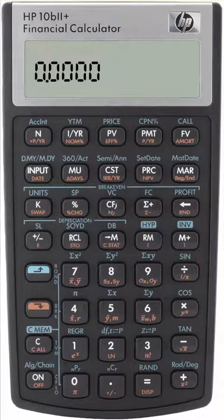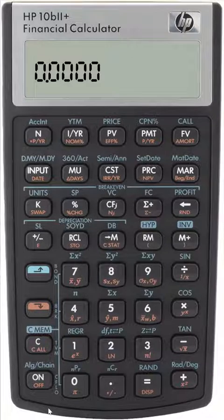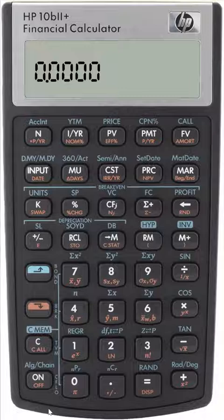What is the difference between algebraic and chain mode on your HP-10B2? To explain, let us try 4 plus 5 times 6.